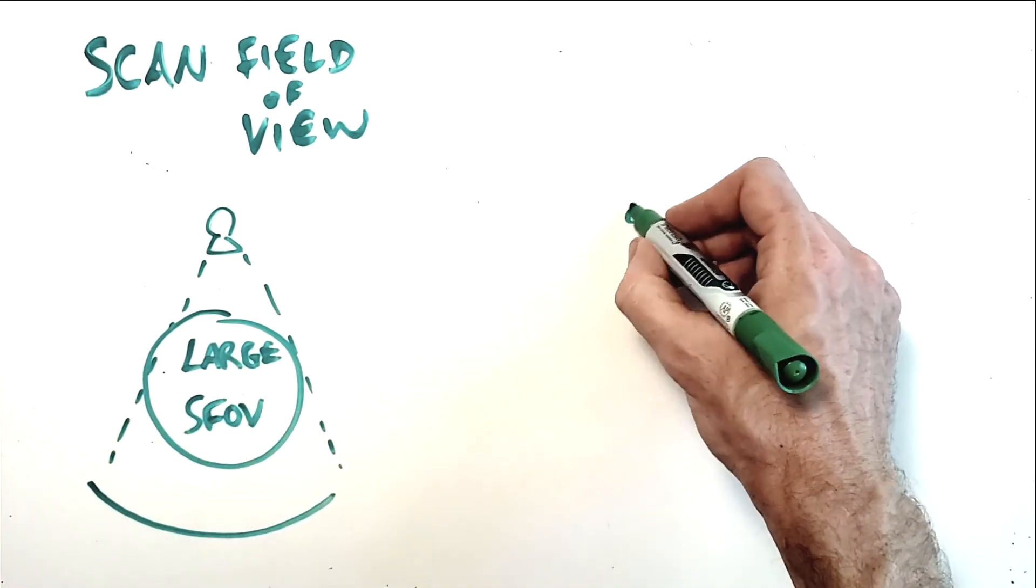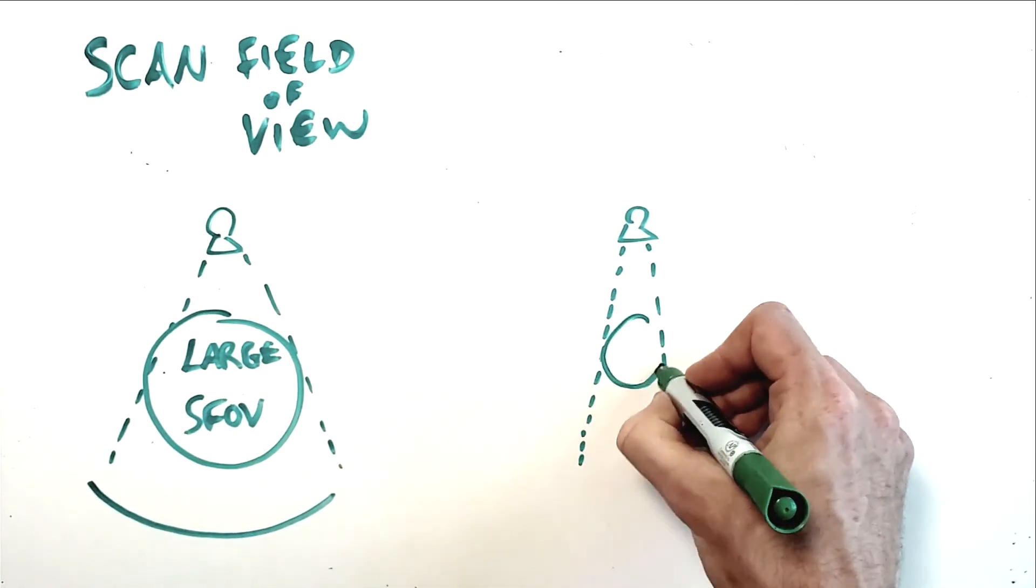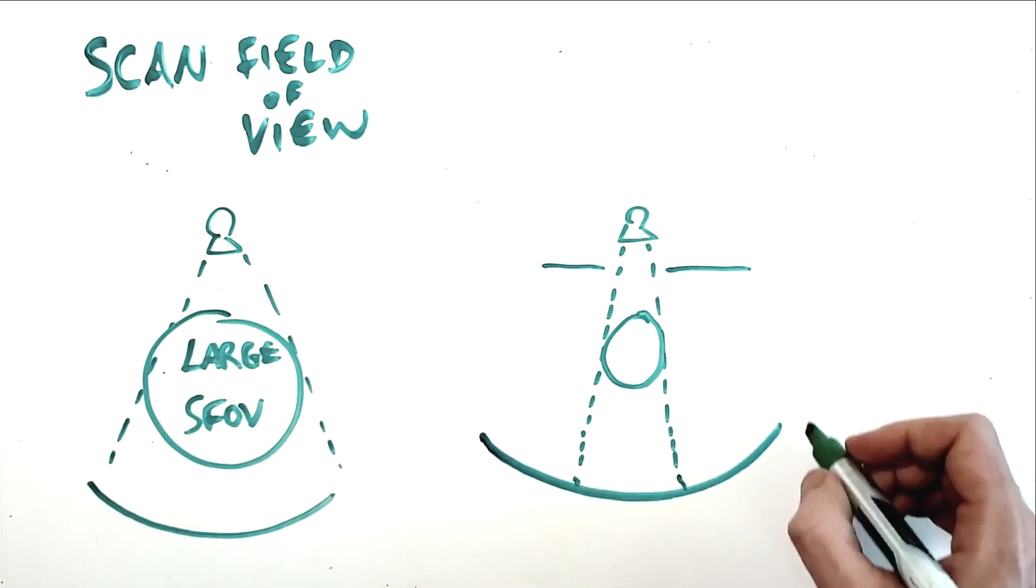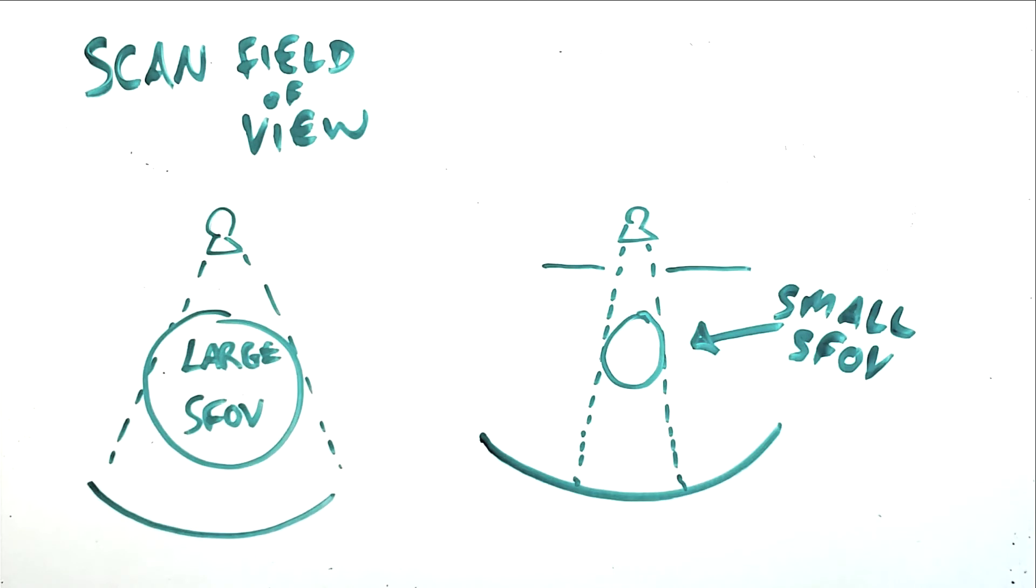In short, scan field of view is defined at the time of the scan and refers to the total area in which data is acquired, whereas display field of view can be manipulated after the scan, but can never be larger than the scan field of view, because no data exists outside of the scan field of view.